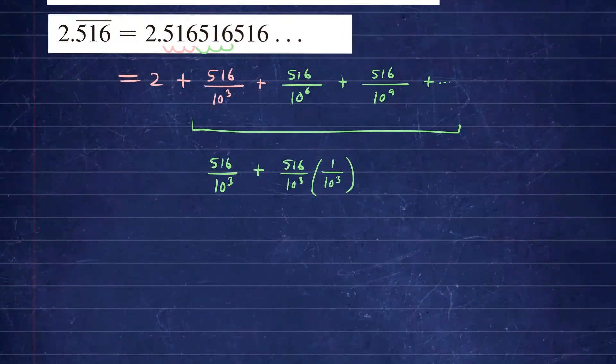So the next term we're going to generate by simply taking, again, the number A, which would be 516 over 10 to the 3rd power, but we will have 1 over 10 to the 3rd power to the 2nd power.